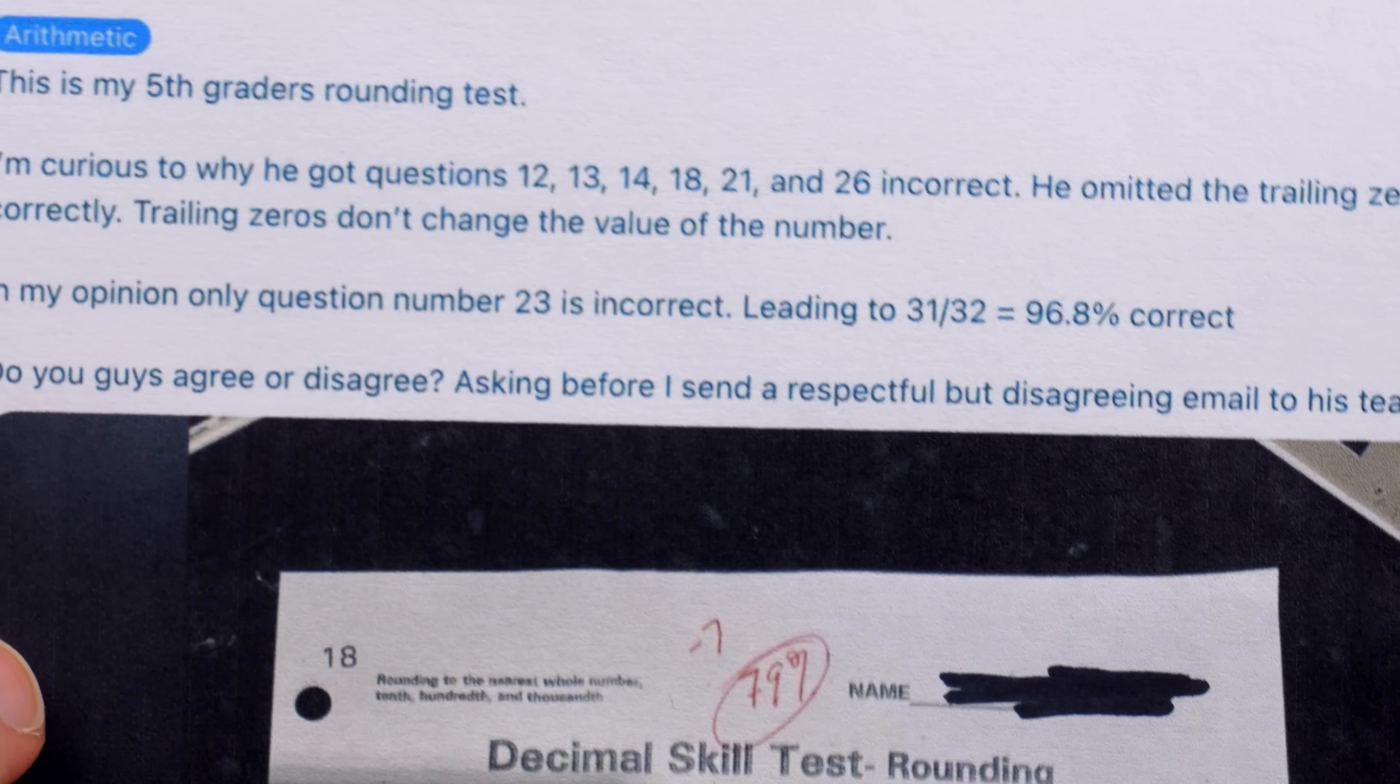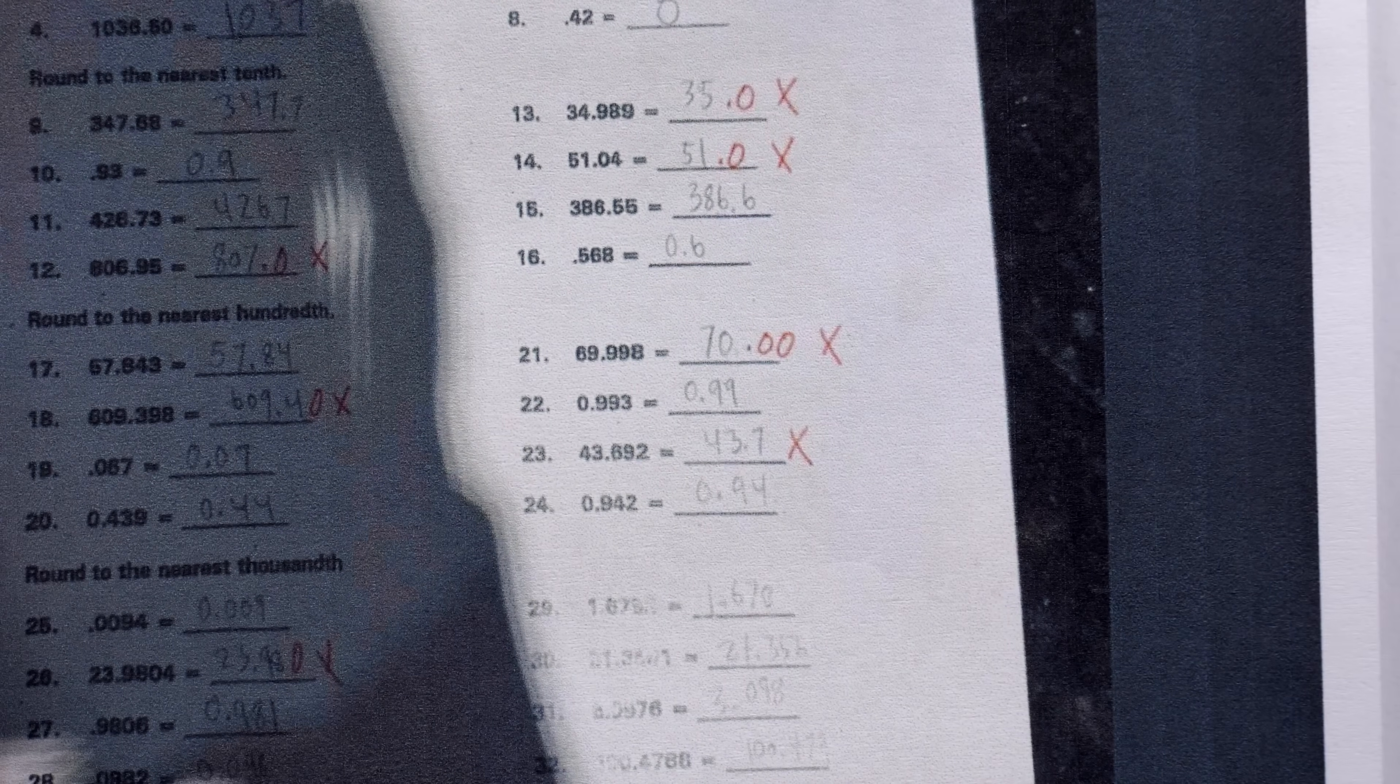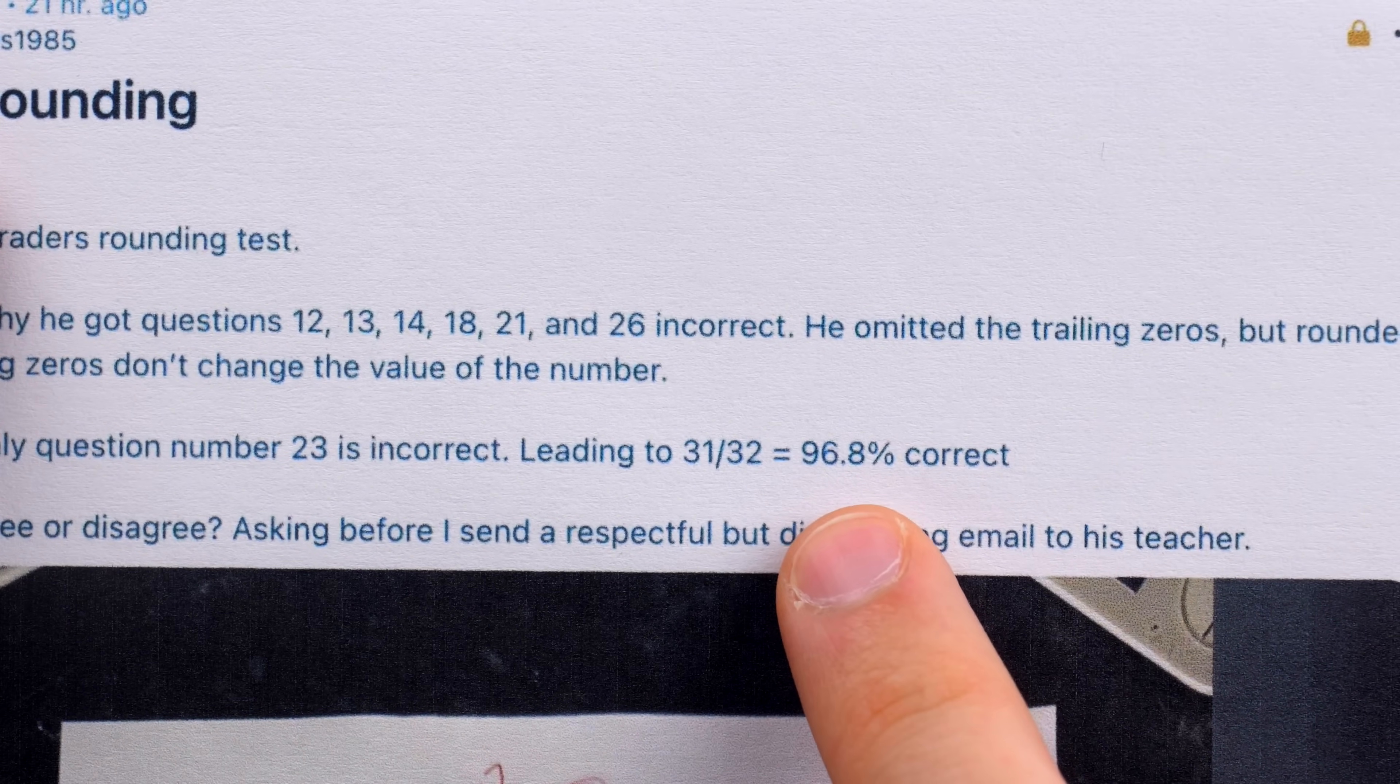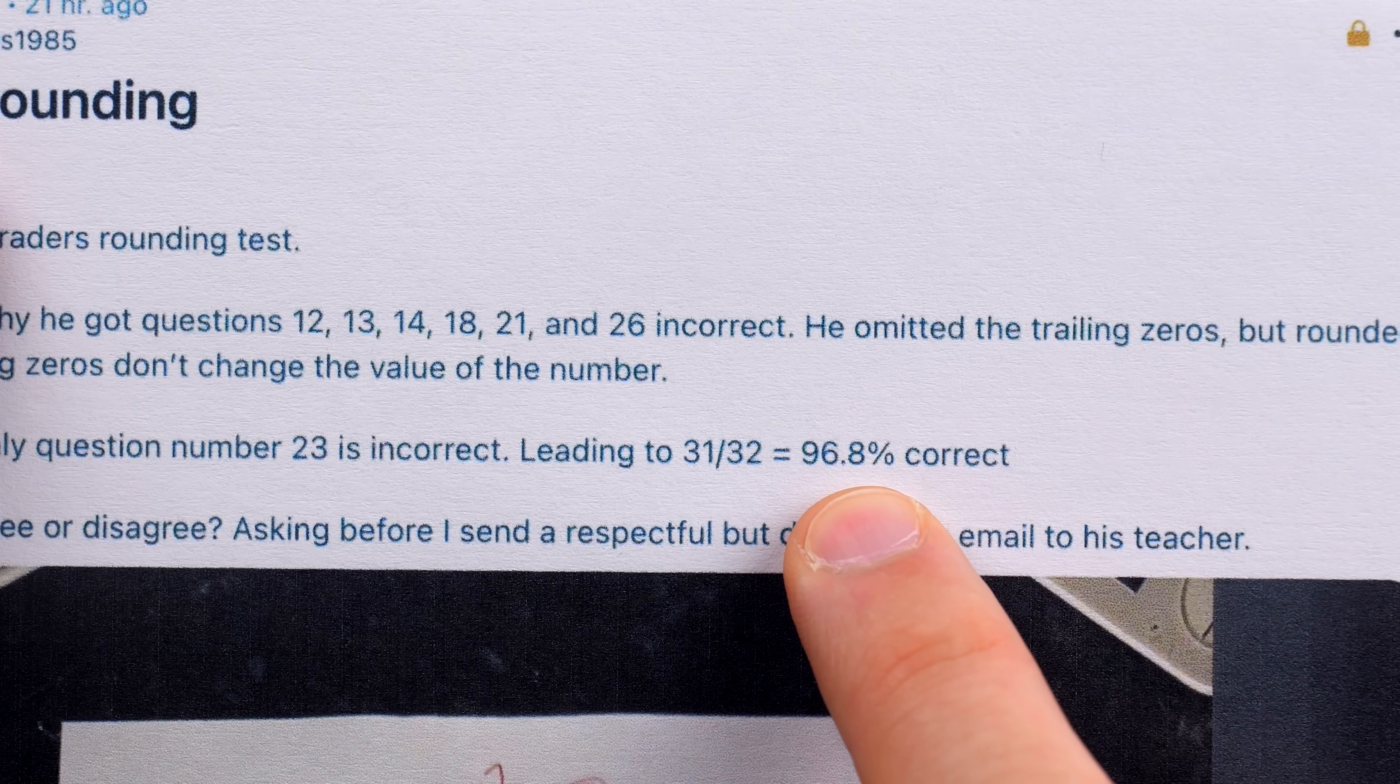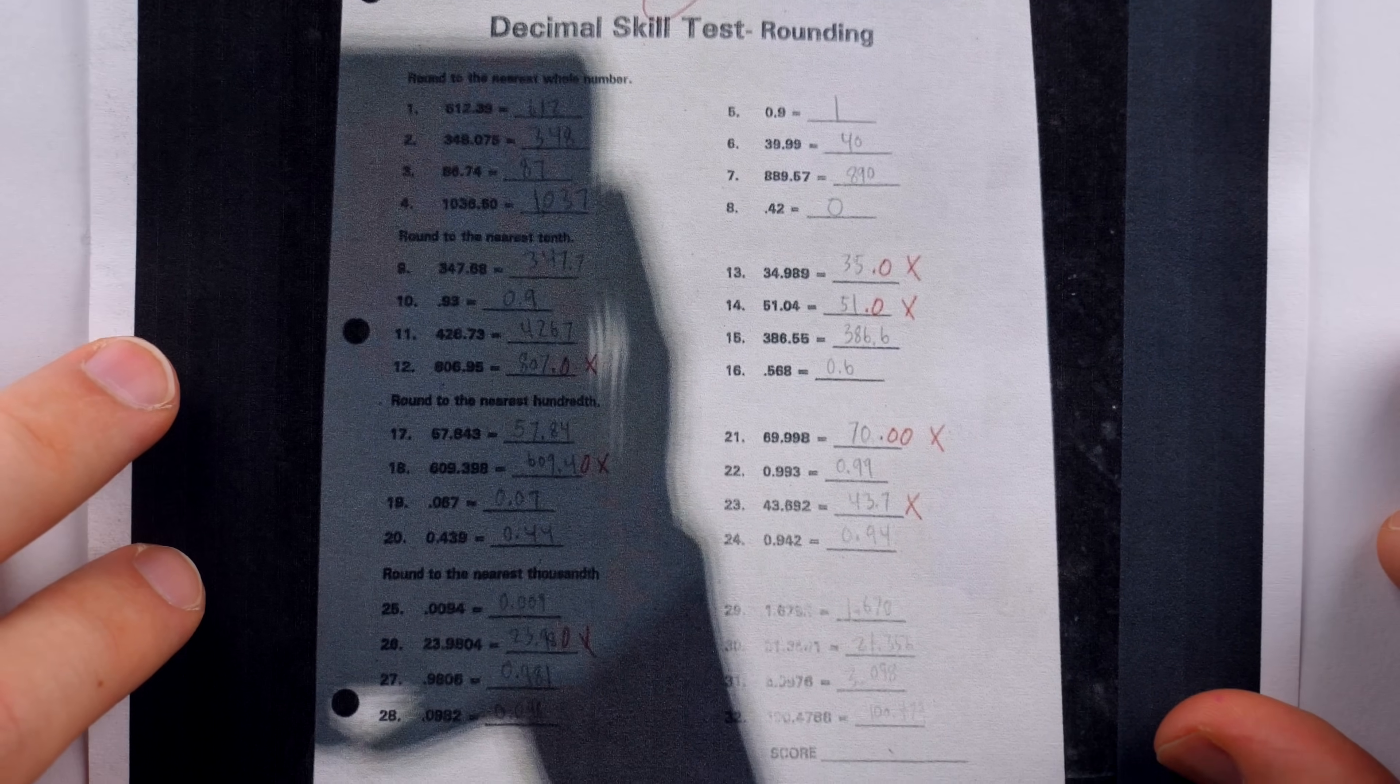The father is explaining how, since the trailing zeros don't change the number, he thinks the only problem his son really got wrong was problem 23, and so the actual score should be a strong A, 96.8%. Let me know what you think about this grading in the comments. And now I'll explain both sides to you as I see them.